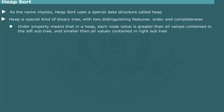The Order property implies that each node of a heap contains an element that is larger than both left and right children. It follows that in a heap, the largest element will always be located at the root.